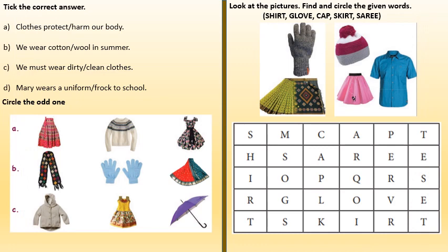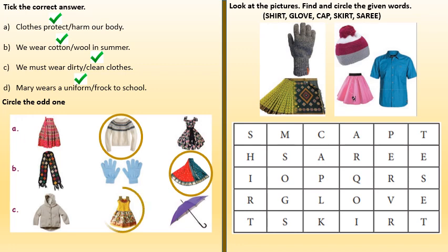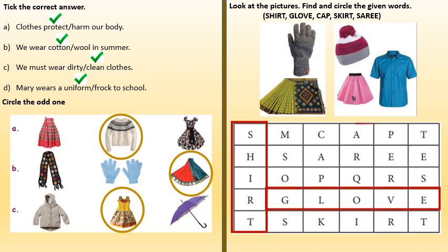Check the correct answer: Clothes protect our body. We wear cotton in summer. We must wear clean clothes. Many wear a uniform to school. Circle the odd one: first is the woolen shirt, second is the silk sari, third is the dress. And here is a puzzle — if your child is interested, you can ask them to do it.